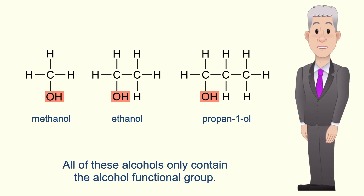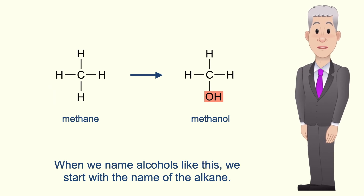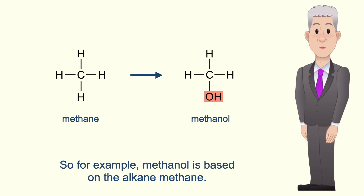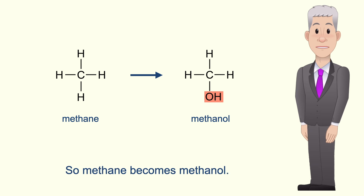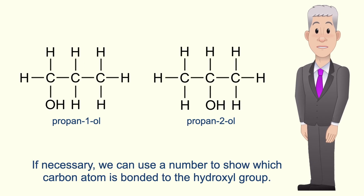Now all of these alcohols only contain the alcohol functional group. When we name alcohols like this we start with the name of the alkane. So for example methanol is based on the alkane methane. We then remove the final 'e' and add the suffix '-ol'. So methane becomes methanol. If necessary we can use a number to show which carbon atom is bonded to the hydroxyl group.